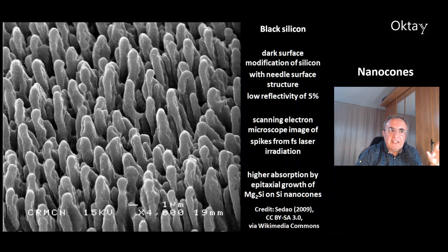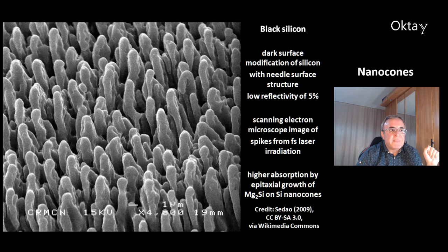This is a picture of black silicon — a dark surface modification of silicon with a needle surface structure. It has a very low reflectivity of 5%, which is desirable for solar cells. This scanning electron microscope image shows spikes that were made by femtosecond laser irradiation. Higher absorption can be reached by epitaxial growth of magnesium silicide on these silicon nanocones.